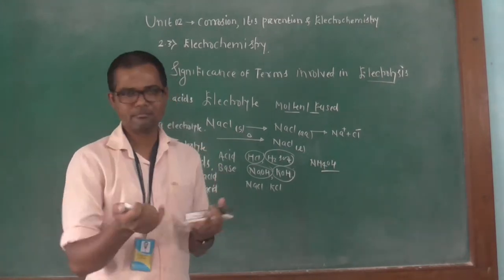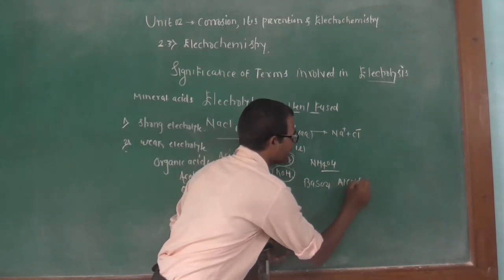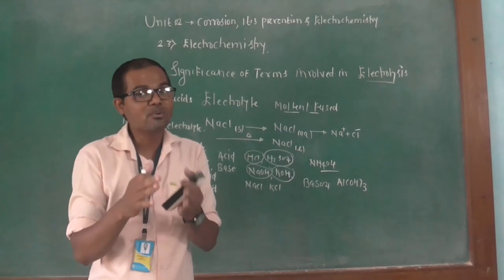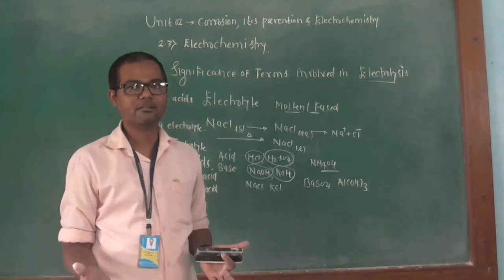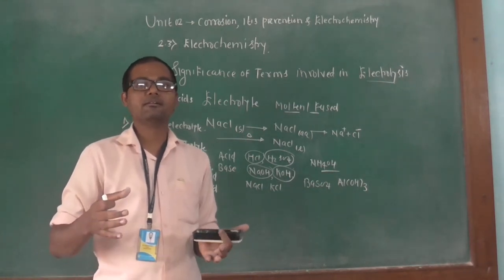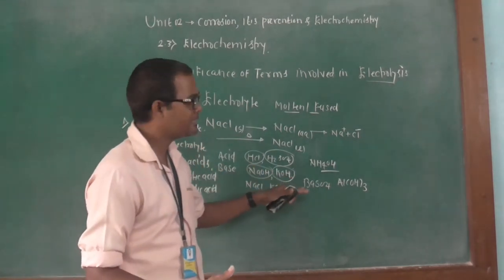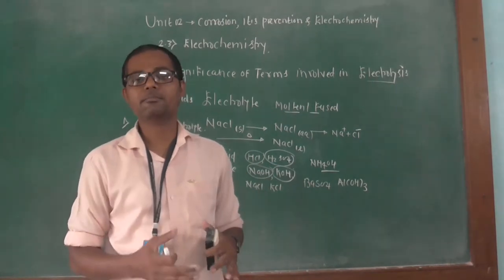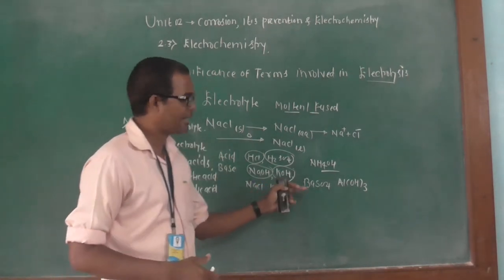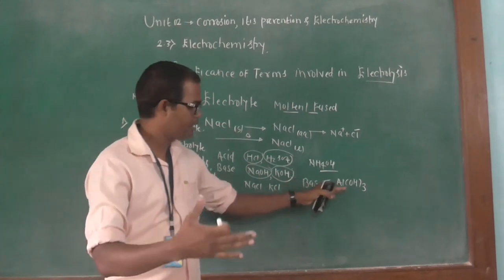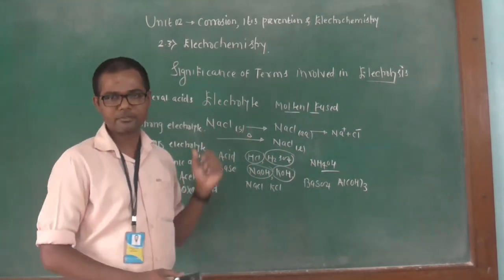Some insoluble salts — such as barium sulfate and aluminium hydroxide — are also examples of weak electrolytes. They are not highly soluble in water, and their ionization is very weak. Whatever ions are obtained after ionization are low in concentration or amount. So barium sulfate and aluminium hydroxide are insoluble salts and are examples of weak electrolytes. That is all about the electrolyte.